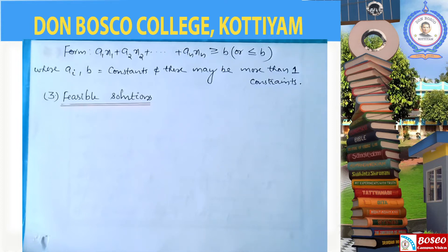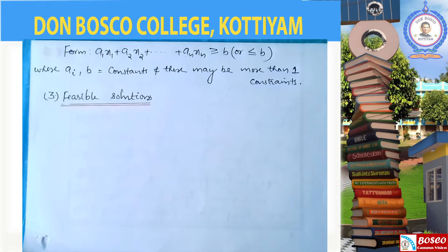For example, the variables represent the number of products of A and the number of products of B. That is what we write as the variables. So what is the feasible solution?